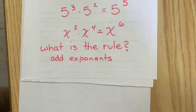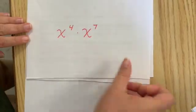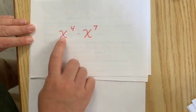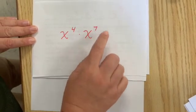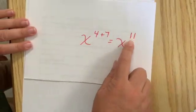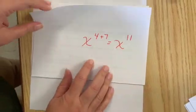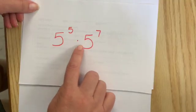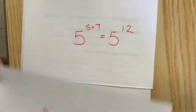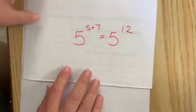So let's try this one. And now you don't have to expand it. What would be x to the fourth times x to the seventh would be x to the eleventh. Let's try another one. Five to the fifth times five to the seventh would be five to the twelfth.